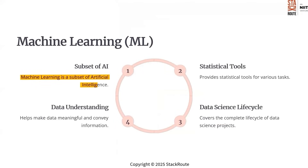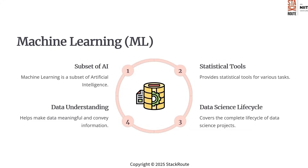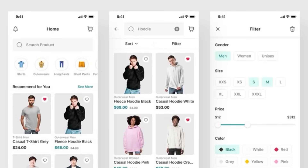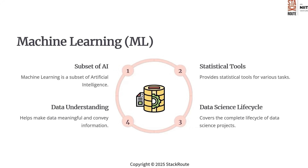Now let us talk about machine learning, or ML, which is a subset of AI. Its main goal is to use statistical tools to analyze data, make predictions and uncover insights. Imagine you are working on a data science project — from collecting and cleaning data to transforming and analyzing it, ML provides the tools to handle every step. It helps us understand patterns in data, making it meaningful and actionable. ML can predict sales trends, forecast weather or even recommend products based on past purchases.